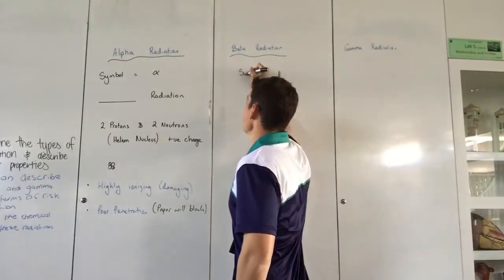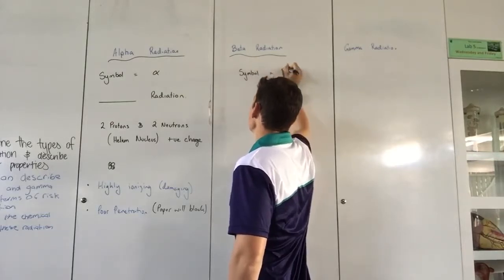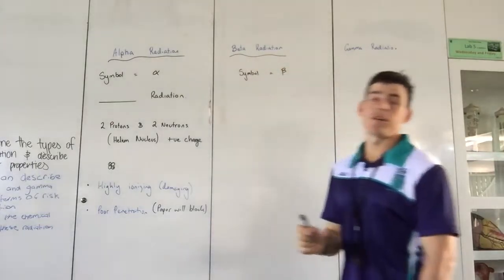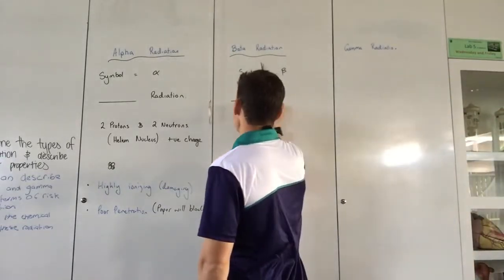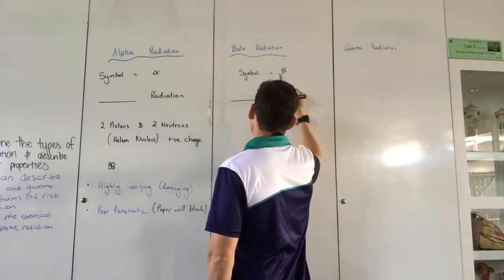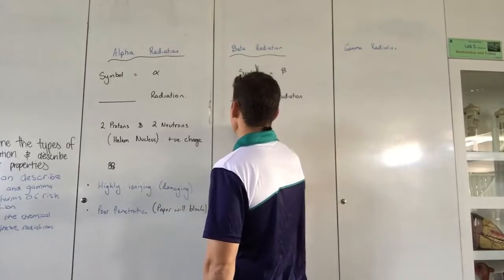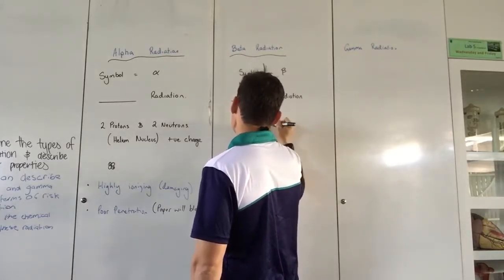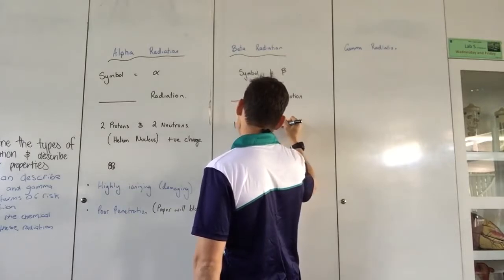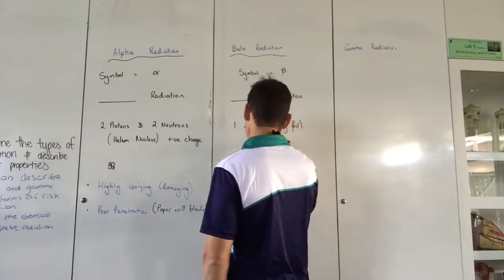The symbol for beta radiation is beta in the Greek alphabet, which is kind of like a B with a tail. I'm going to leave here to decide whether it's the E or the N type radiation. It's made up of one electron moving very fast, which means it has a negative charge.